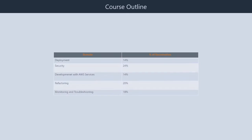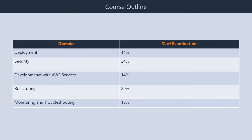Course Outline. First, deployment, which comprises 22% weightage for this exam. Second, security, which comprises 26% weightage. Third, development with AWS services, which comprises 30% weightage. Fourth, refactoring, which comprises 10% weightage. Fifth, monitoring and troubleshooting, which comprises 12% weightage for this exam.